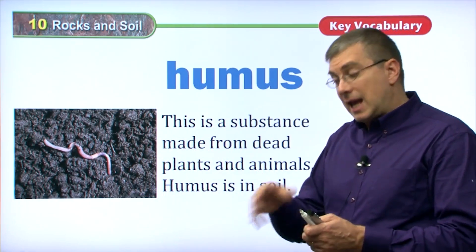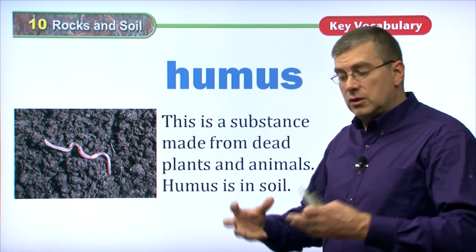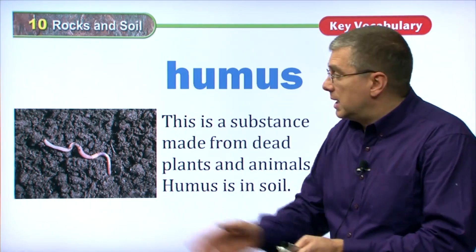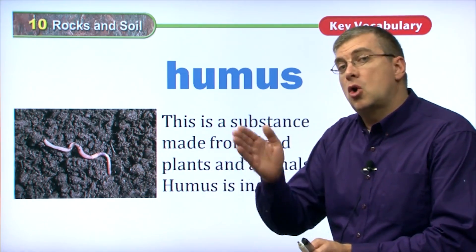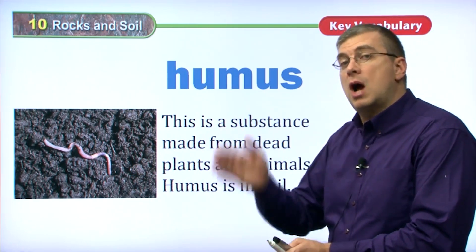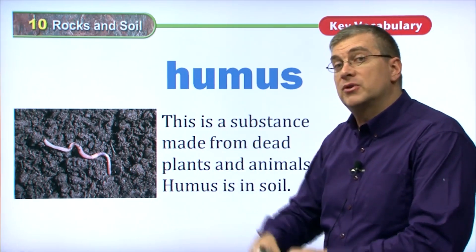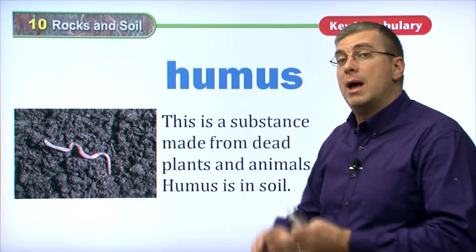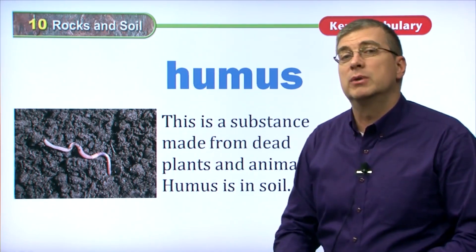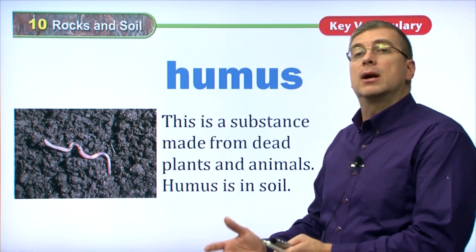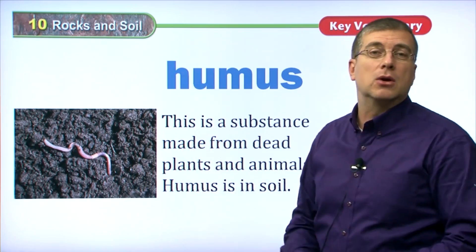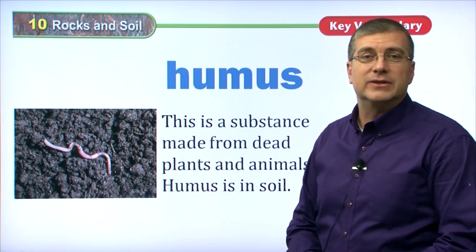American Indians used to catch fish, eat the fish, and then take the rest of the fish and put it in the soil next to their corn where they grew crops. And that helped their crops grow well. And that's humus — they were using humus in their soil to help their crops grow so that they could grow plants to eat.